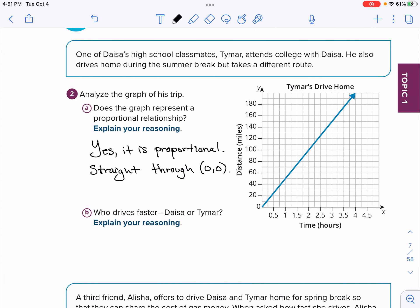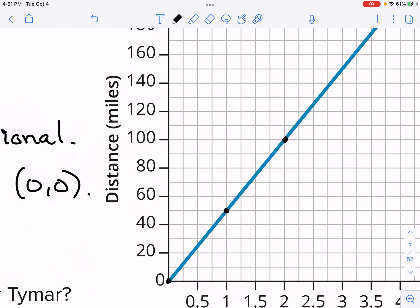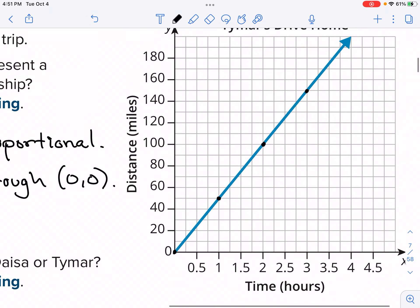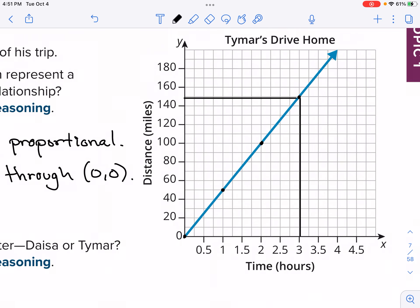So it goes through the origin. So we know it's proportional, meaning that you can multiply any number. Let's say like one, you can multiply that by a number and you'll be able to find what is the distance that Tamar traveled. Who drives faster, Daisy or Tamar? Now this comes from our understanding of using the graph itself. I want you to find a good point. Now a good point, what I mean is a point on the line that goes through the corners of the square of the grid. So some good points here. This is a good point. You could use zero, zero, but that doesn't help us.